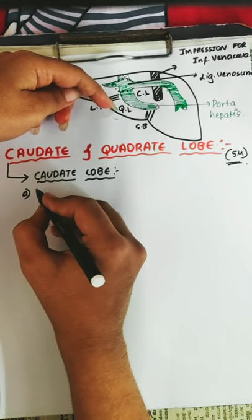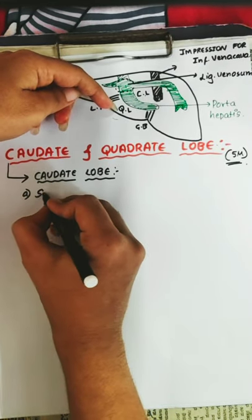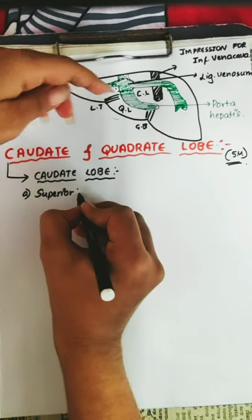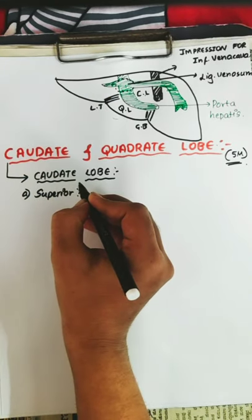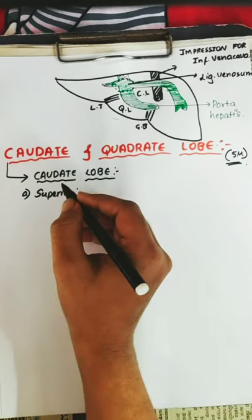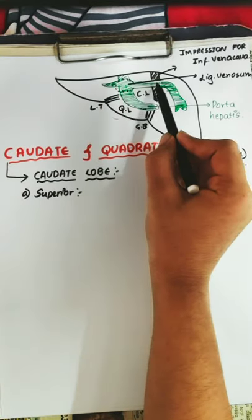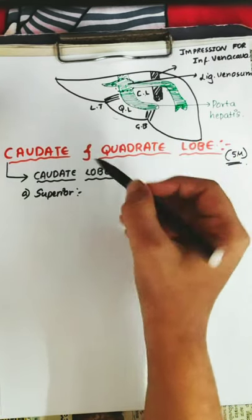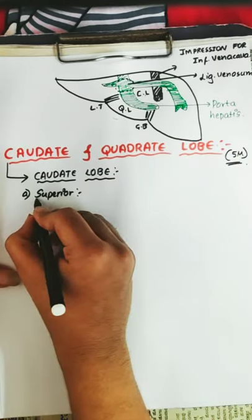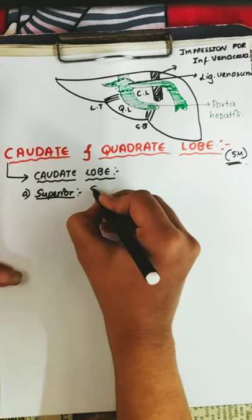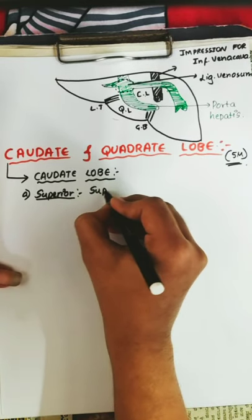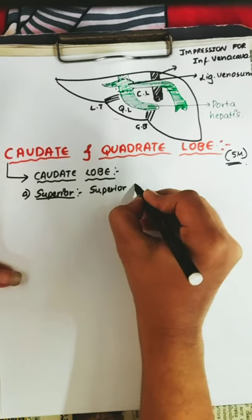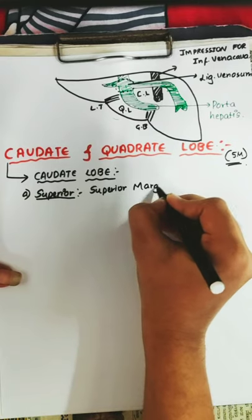First one is the superior border. The superior border is continuous with the superior margin. So superior border equals superior margin.